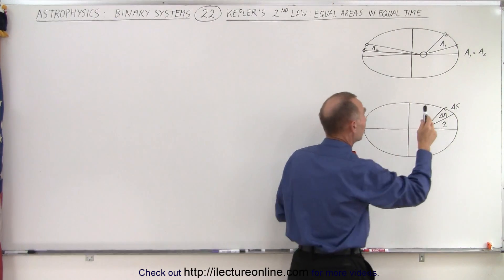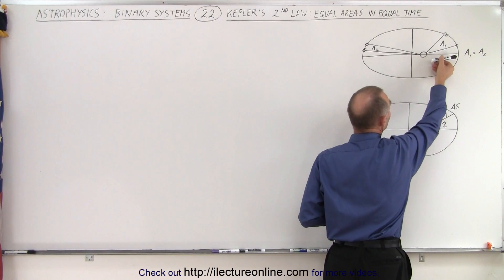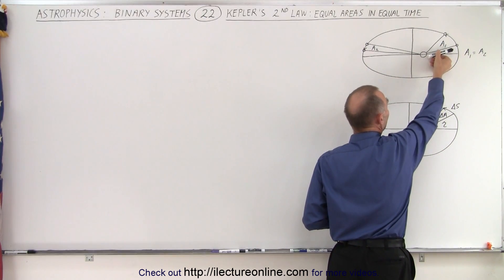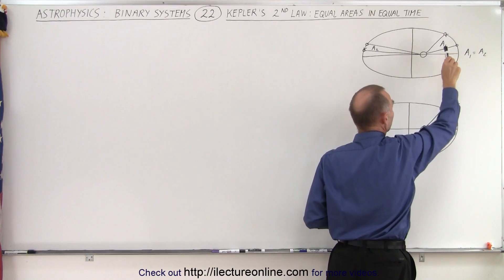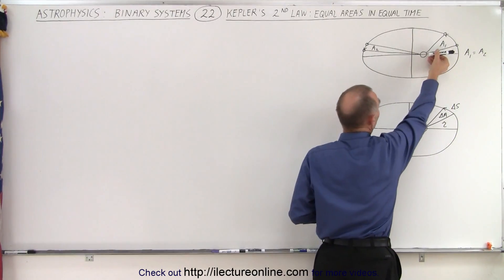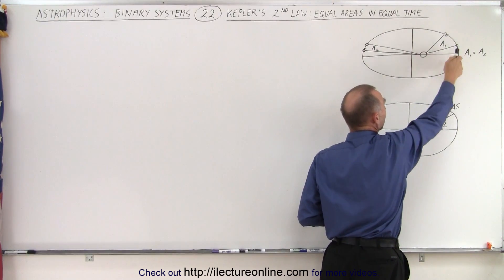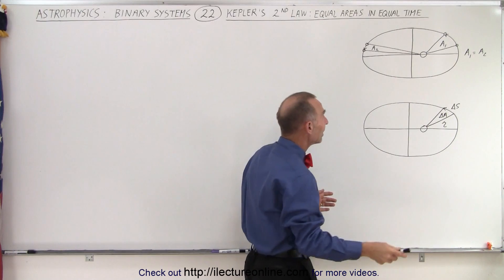Now if you have an imaginary line from the sun to the planet, and then you see the line moving as the planet moves, that line will then sweep out a certain area in a certain amount of time. So in a specific amount of time, it will sweep out the area A1. Notice that there will be a bigger angle here because the planet is traveling faster.